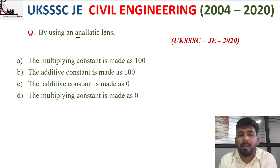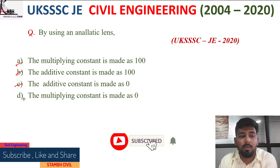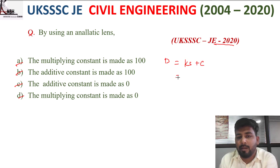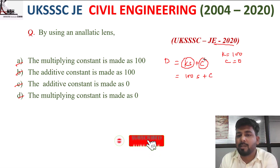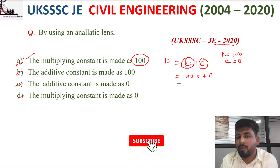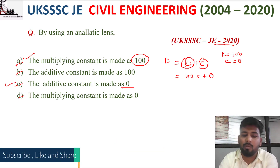Next question: by using an anallatic lens — option A the multiplying constant is made as 100, B additive constant is made as 100, C additive constant is made as 0, D the multiplying constant is made as 0. The tacheometry formula is D = kS + C, where k (multiplying constant) = 100 and C (additive constant) = 0. So the correct options are A and C.